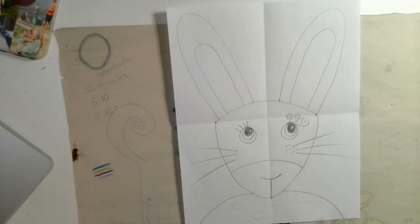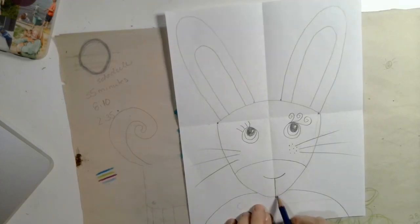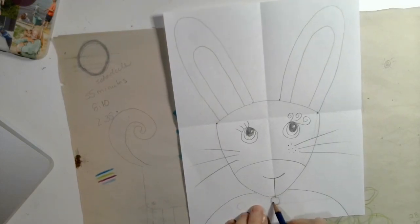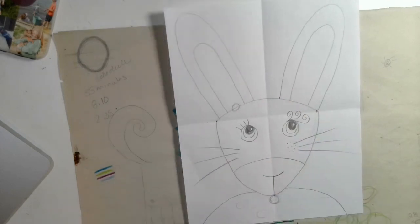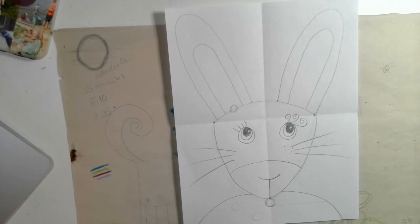You could cut out a little bow tie from a piece of scrap paper and glue it right here and give your bunny a bow tie, or glue it up here and give your bunny a bow. So there's lots of different things you can do with your bunny. You can color it with crayon or marker, whatever you want.